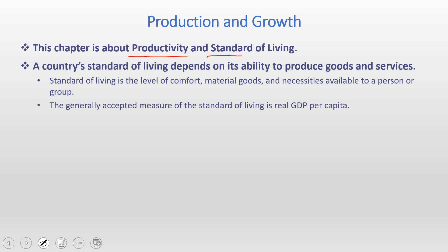We need to understand productivity and standard of living because this chapter is about these two main concepts. Productivity and standard of living are interlinked — if there is more productivity, it will have a direct impact on standard of living. A country's standard of living depends on its ability to produce goods and services.